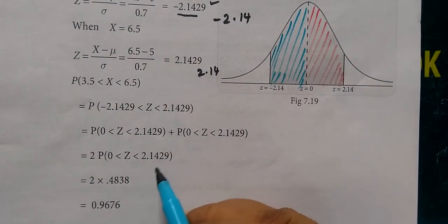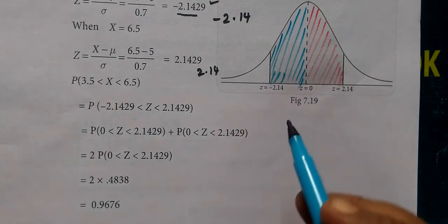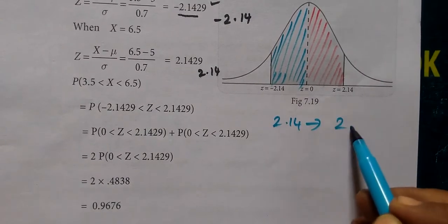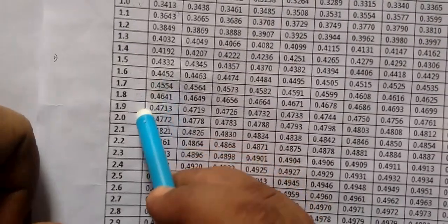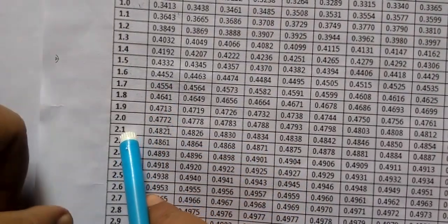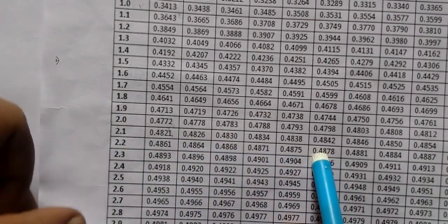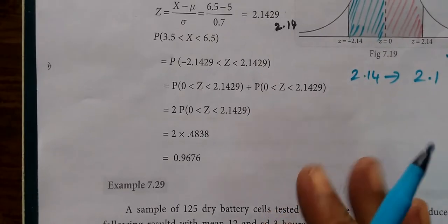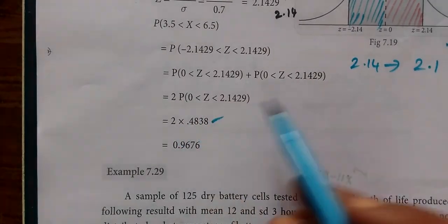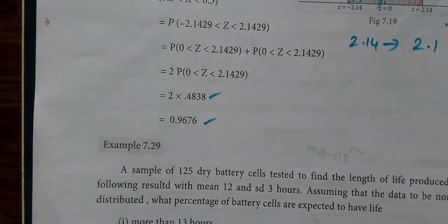Now we'll see the table. For 2.14, we look at row 2.1 and column 4. Looking at the table: 1, 2, 3, 4, 5... we get 0.4838. Thank you.